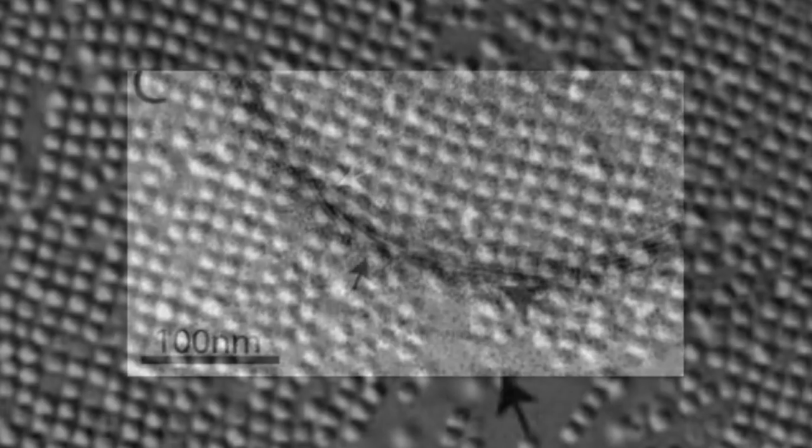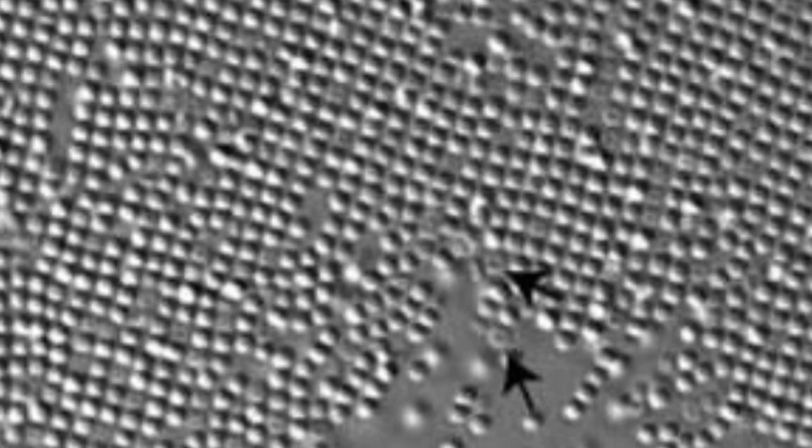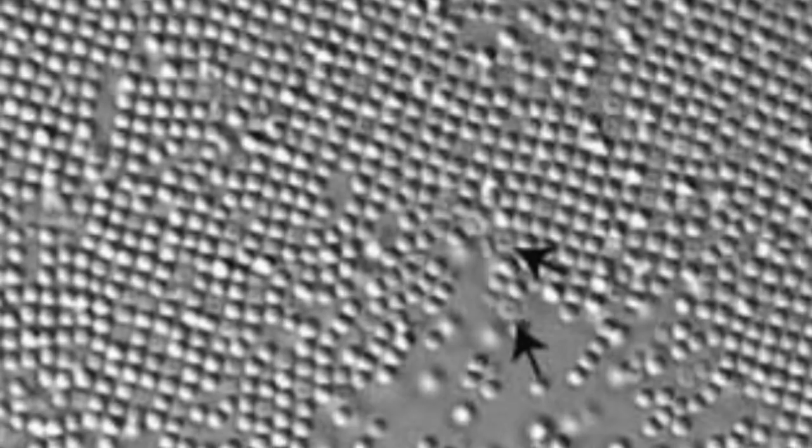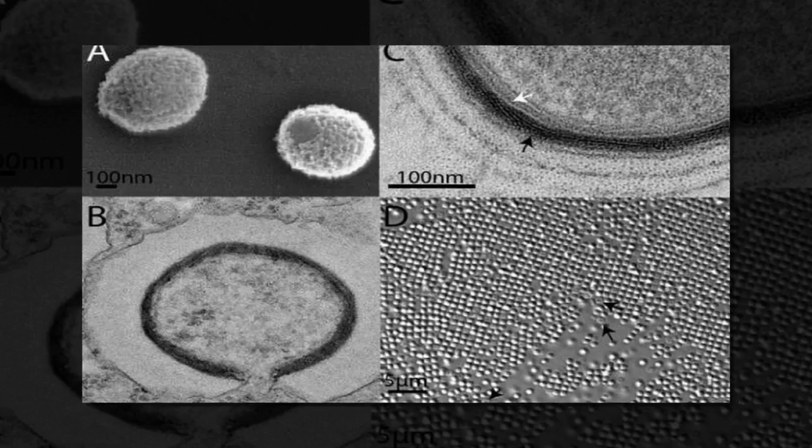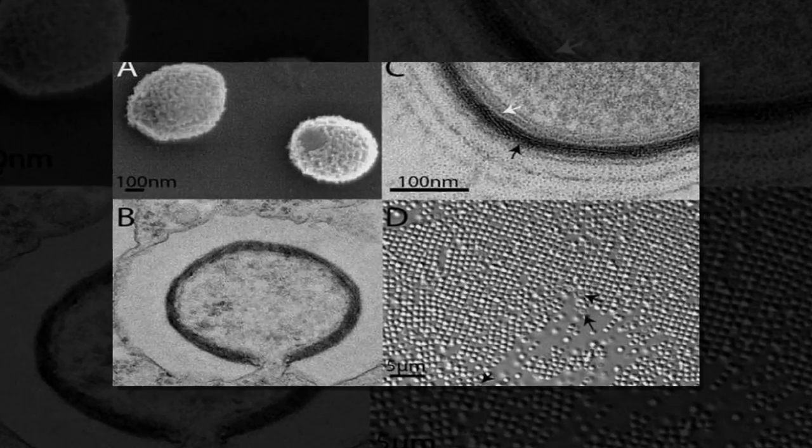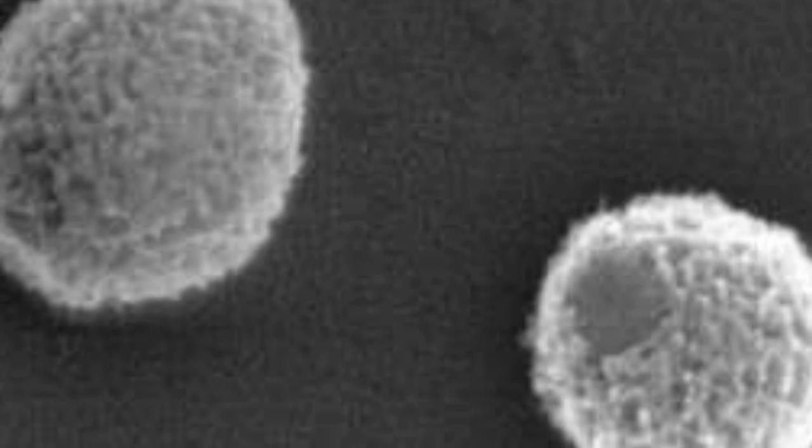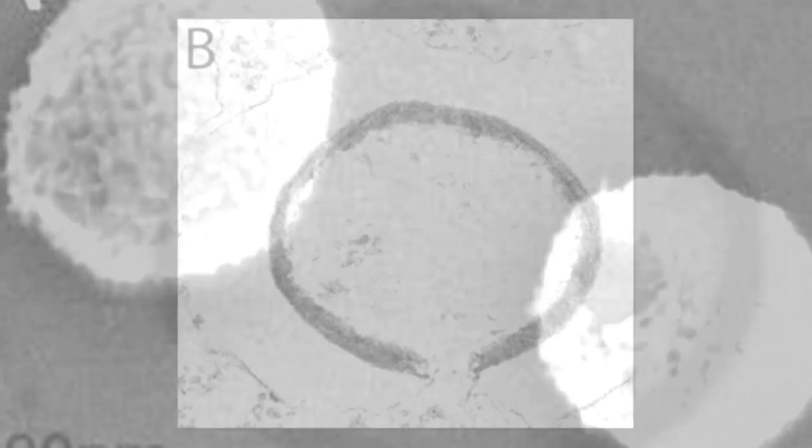Reporting this week in PNAS, the flagship journal of the U.S. National Academy of Sciences, French researchers announced the discovery of Mollivirus sibericum, the fourth type of prehistoric virus found since 2003 and the second by this team.